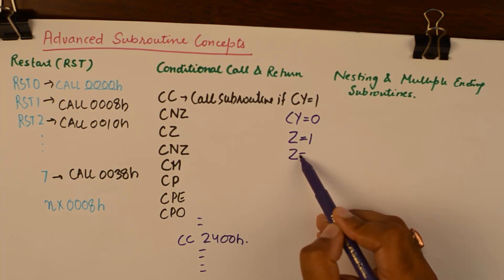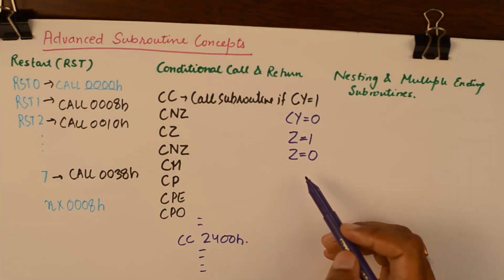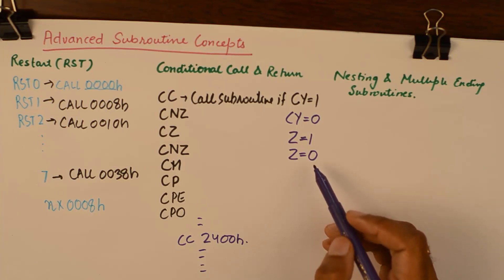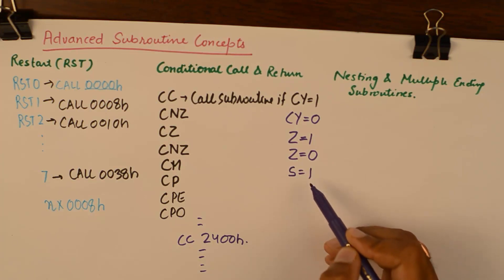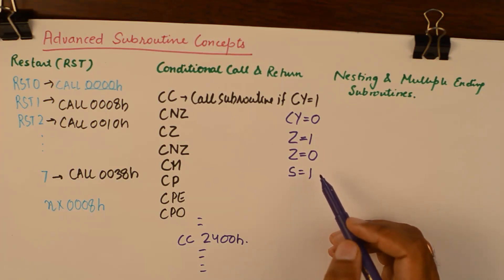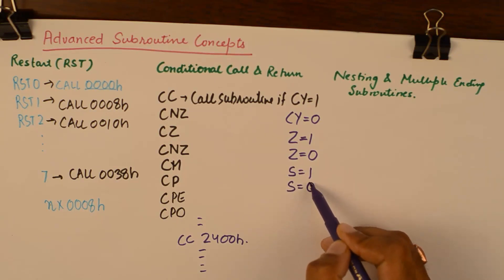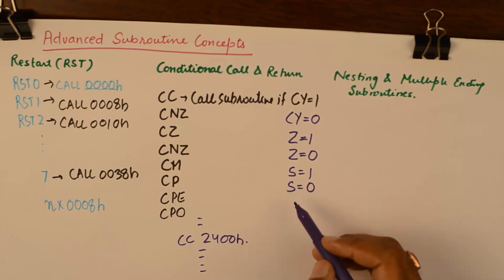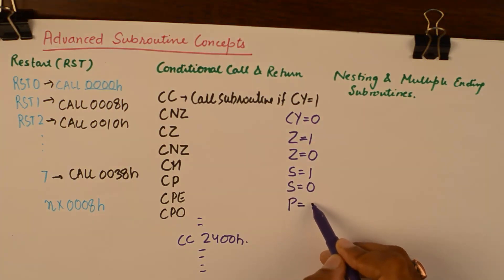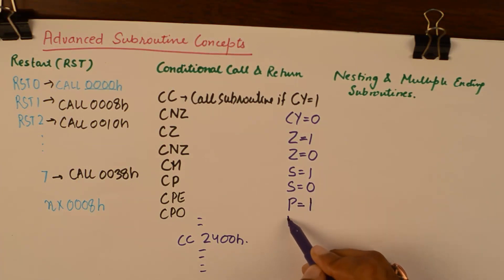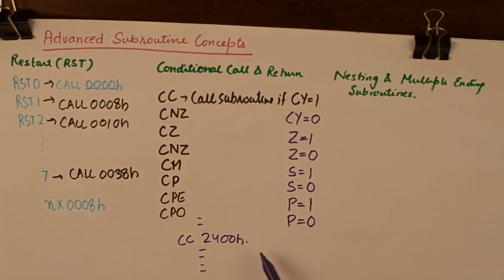Call the subroutine when the zero flag is reset. Call the subroutine if the sign flag is set. Call the subroutine if sign flag is reset. Call the subroutine if parity is even, and call the subroutine if parity is odd. Before branching to a subroutine's location it checks one condition, giving additional control over programming.